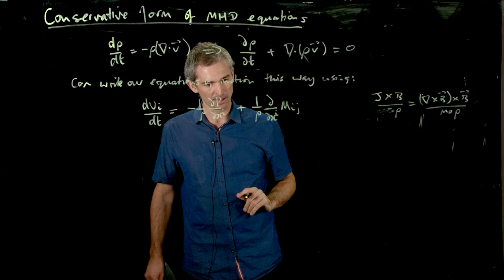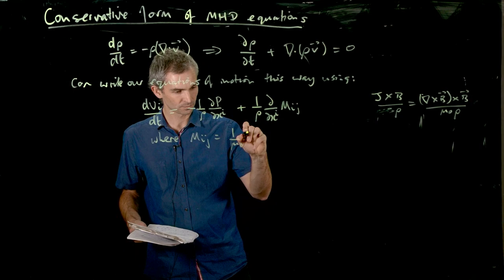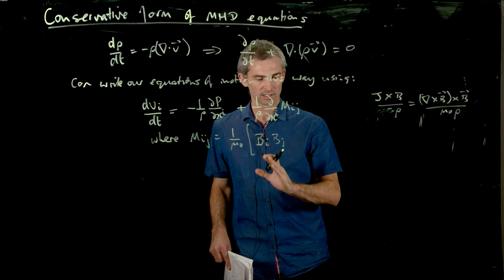So this is like a ddxi of a stress tensor. So it's an mij. Where our stress tensor, mij, is simply what's called the Maxwell stress tensor. It's a one on mu naught. And it's a b i b j. So that's the thing with rank two. So that's like a dyad.